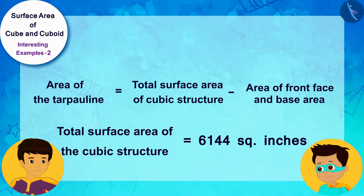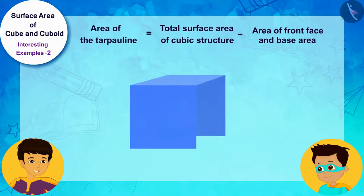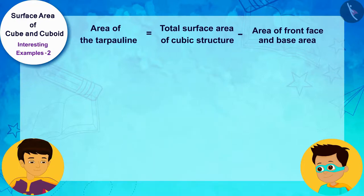Now we just have to subtract the areas of the front and base area from it, and then we will get the size of your tarpaulin. Both the front and base area are congruent, therefore their areas will be the square of the measurement of their sides. In this way, the sum of the areas of the two surfaces will be two times the square of the measure of the sides.